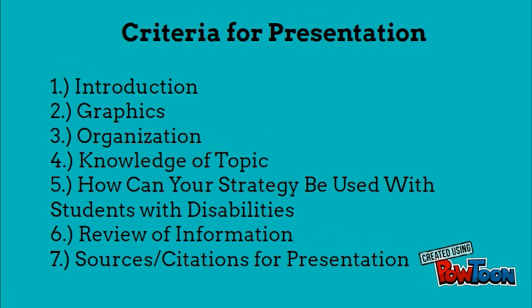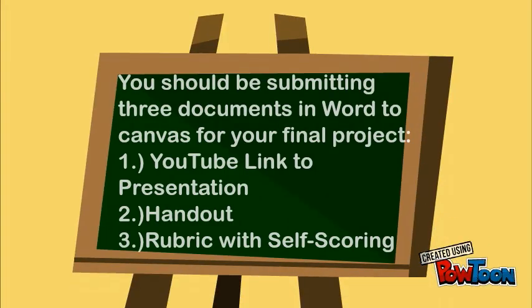The seven criteria are: introduction, graphics, organization, knowledge of topic, how your strategy can be used with students with disabilities, review of information, and sources and citations for your presentation. These all need to be met, and further information can be found in the rubric.